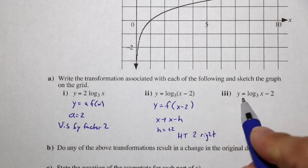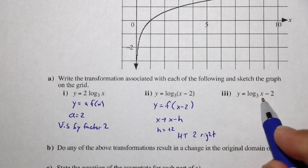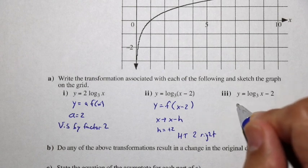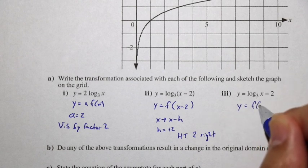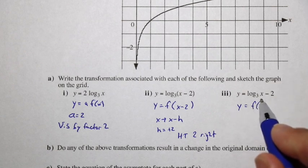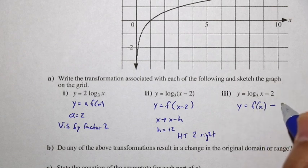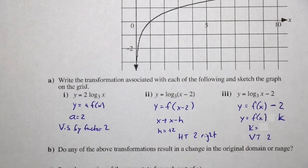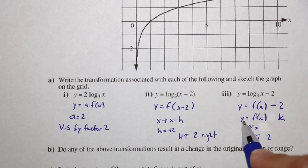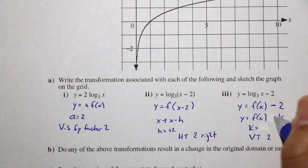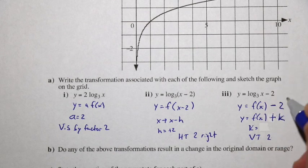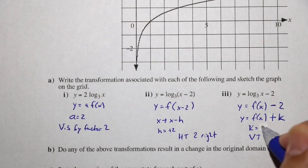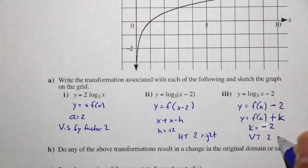In part 3, we have y equals log base 3 of x minus 2, which is the original function minus 2. We can think of this as y equals f of x plus k, where k equals negative 2, which corresponds to a vertical translation of 2 units down.